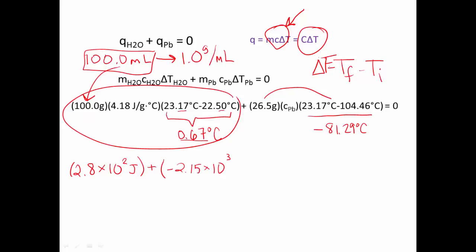Plus negative 2.15 × 10³. Now let's look at these units. We have grams times degrees Celsius. So that's what the unit is. Grams times degrees Celsius times our CPb. And that is equal to zero.